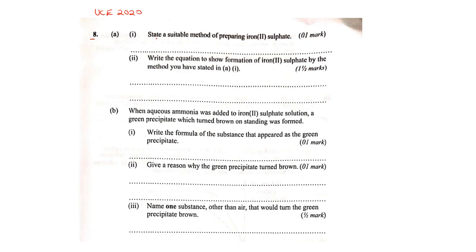Question 8 asks to state a suitable method of preparing iron(II) sulfate. For preparing any salt, we first need to know if the salt is soluble in water or not. Iron(II) sulfate is soluble in water. To prepare it, we need to find a way of introducing iron and sulfate ions, bringing the iron(II) ions and sulfate ions together in solution to form iron(II) sulfate.